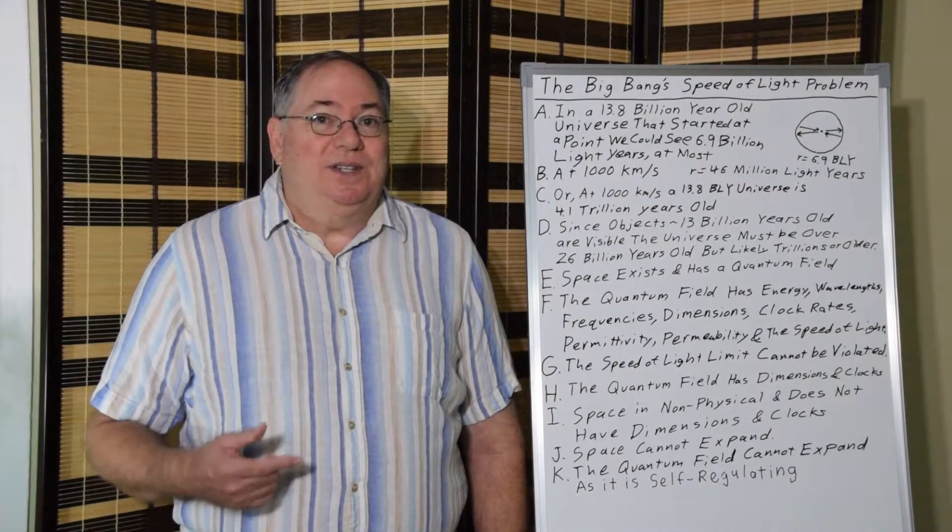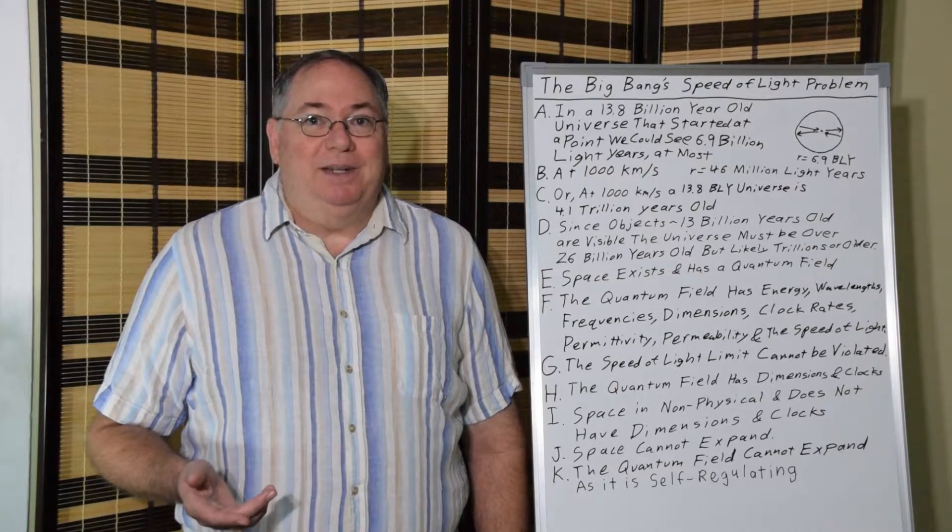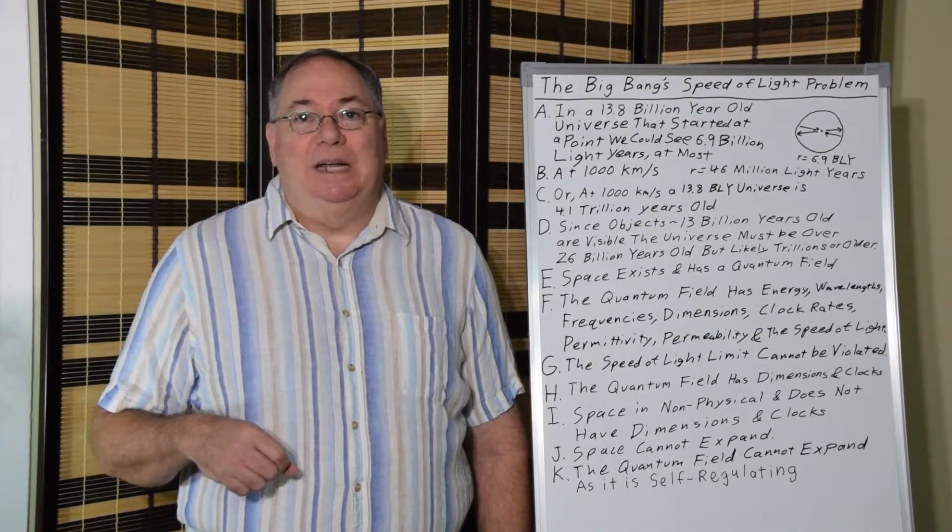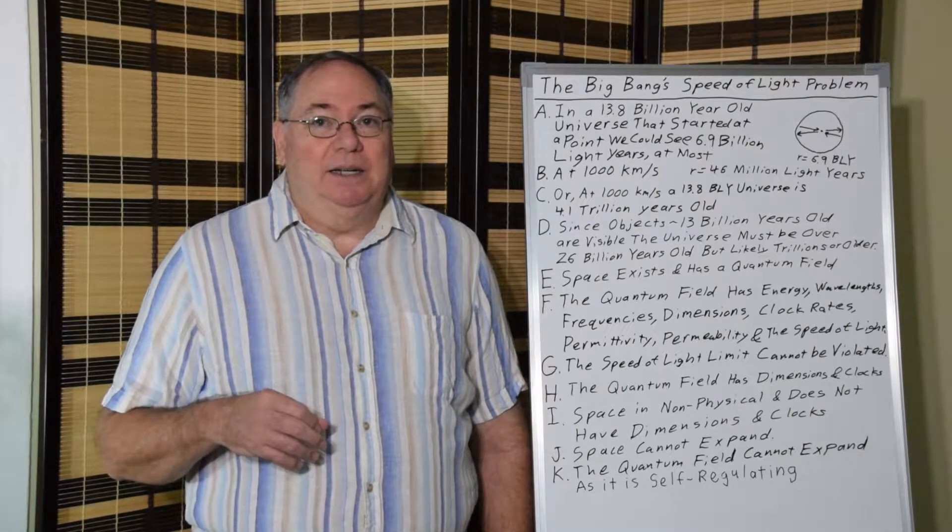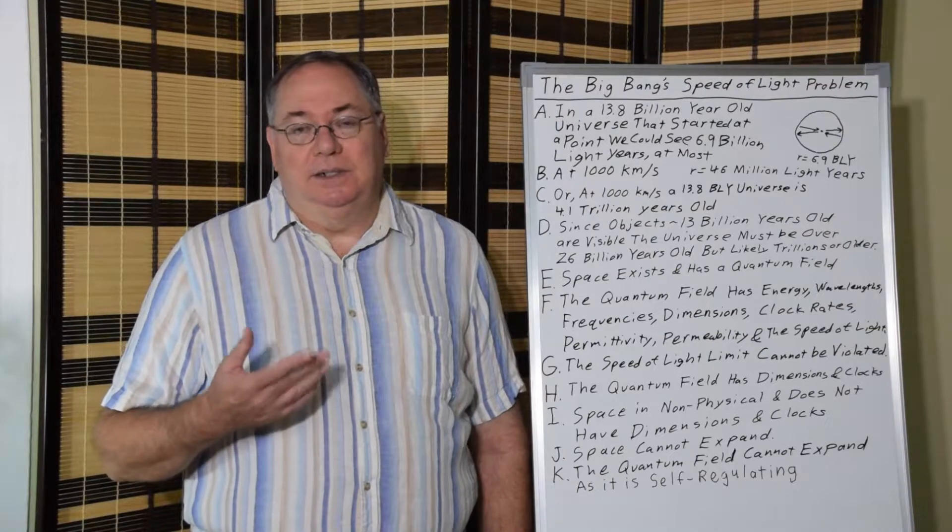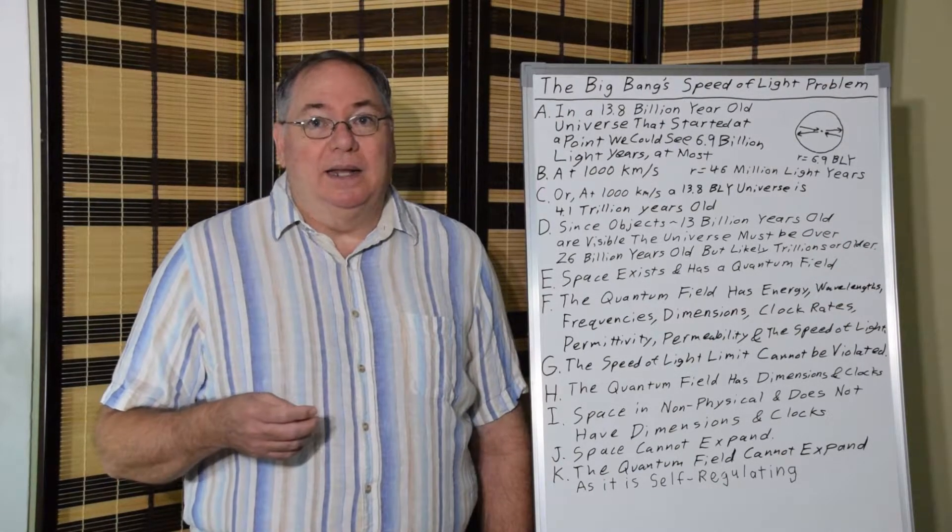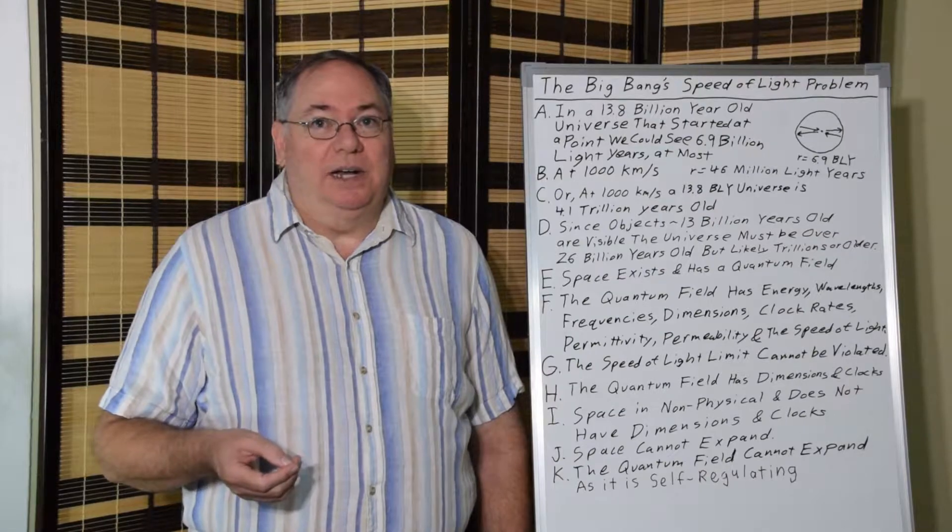However, physicists choose to ignore the speed of light limit when it comes to the Big Bang model. And it's pretty simple to understand how the problem arises and why it is that it's obvious that they're ignoring it.